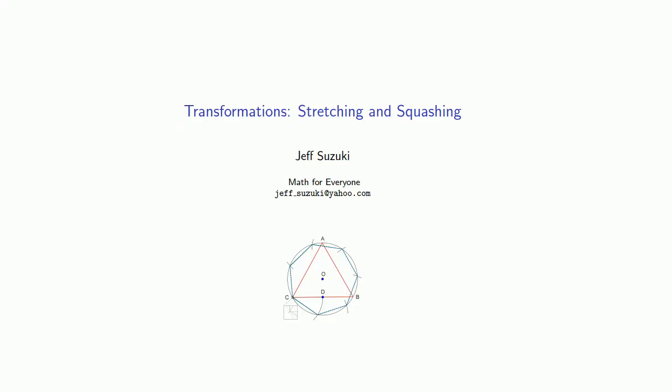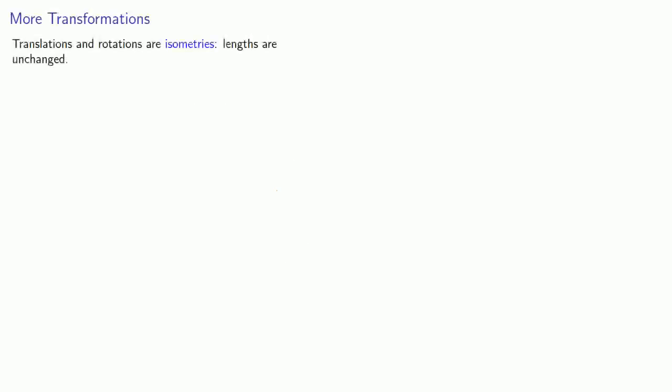Another type of transformation can be viewed as stretching and squashing a geometric object. Translations and rotations are called isometries. Lengths are unchanged by a translation or a rotation. Other types of transformations alter lengths. A scaling expands or contracts the lengths in one or more directions.